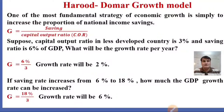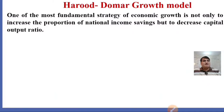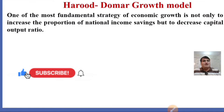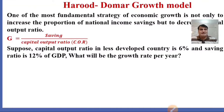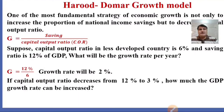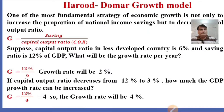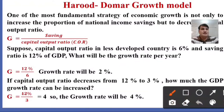According to the Harrod-Domer growth model, a country needs to increase sufficient savings in order to become a developed one. One of the most fundamental strategies is not only to increase the proportion of national income saved but also to decrease the capital output ratio. Suppose the capital output ratio is 6 and the saving ratio is 12% of GDP — the growth rate will be 2%. If the capital output ratio decreases from 6 to 3 while savings remain the same, the GDP growth rate will increase to 4%.